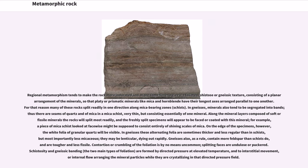For that reason many of these rocks split readily in one direction along mica-bearing zones, called schists. In gneisses, minerals also tend to be segregated into bands; thus there are seams of quartz and of mica in a mica-schist, very thin but consisting essentially of one mineral. Along the mineral layers composed of soft or fissile minerals the rocks will split most readily, and the freshly split specimens will appear to be faced or coated with that mineral. For example, a piece of mica-schist looked at face-wise might be supposed to consist entirely of shining scales of mica, though on the edge of the specimen the white folia of granular quartz will be visible.